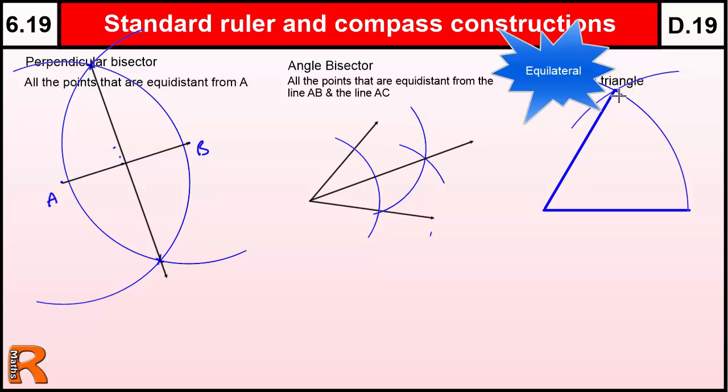So on an equilateral triangle, all the angles are 60 degrees. This is 60 degrees, this is 60, this is 60 because they're all equal and they must have 180. So if I need to do a 30 degree angle, I construct that angle there using the equilateral triangle, and then I bisect the angle to get 30.